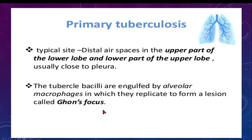Tubercle bacilli are rod-shaped. Suppose there is an active case of tuberculosis in the family — they cough without covering their mouth, so bacilli enter the air. The child inhales them. These tubercle bacilli are engulfed by alveolar macrophages present in the alveoli. The macrophages engulf the bacilli, but the bacilli do not die — they rapidly replicate, and form a lesion called Ghon's focus.